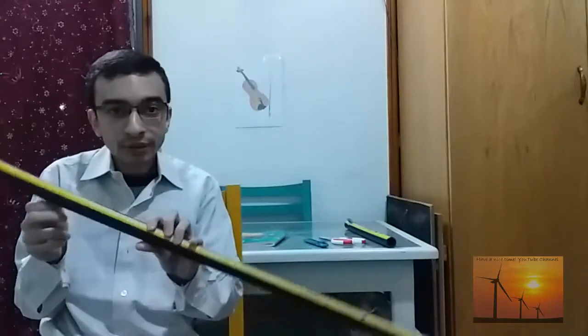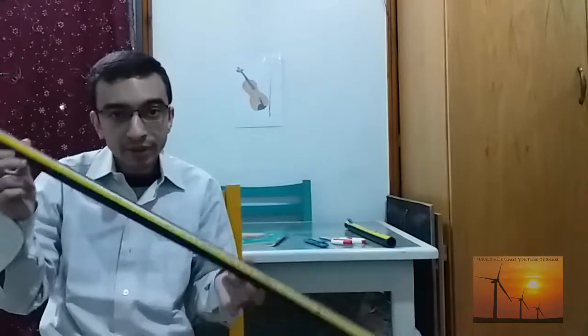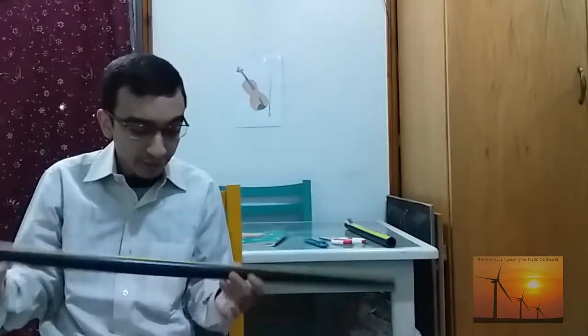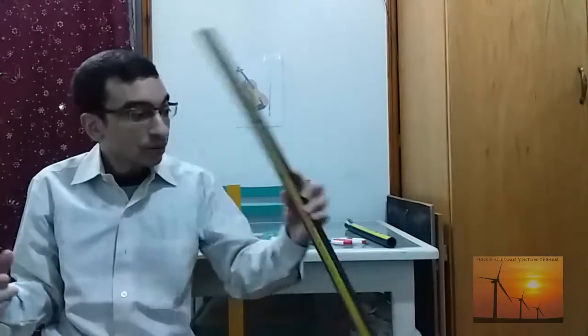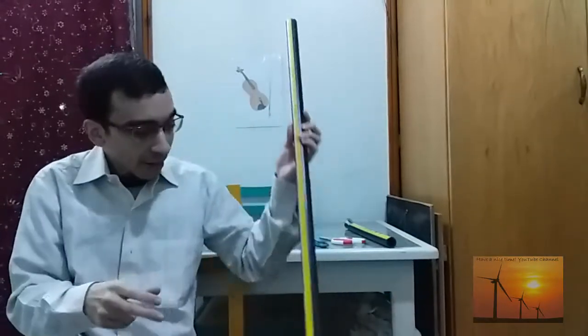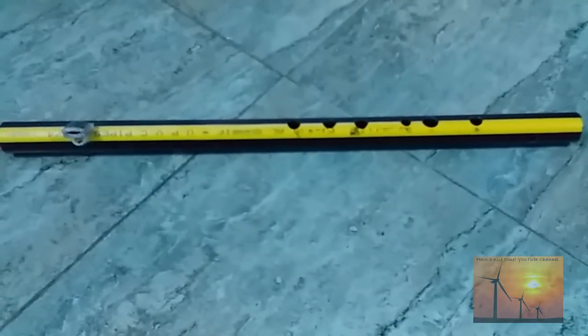So at first I bought a very cheap one meter PVC pipe and in diameter it is three quarter inch, just three quarter inch in diameter and one meter. So this is the flute, it is a PVC pipe.